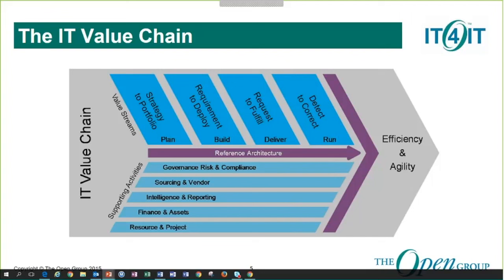The second thing reflected in this value chain is that some activities support all the value streams within that chain — for example, human resources, which we need across each of the value streams. Value chain frameworks help the organization identify activities essential to attaining their business goal. Within IT4IT, we provide the capabilities of managing the business of IT to enable execution across the entire value chain — and not only that, to do it better, faster, and cheaper with less risk.